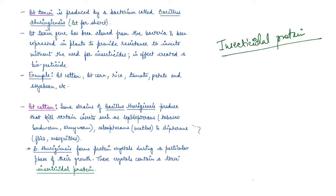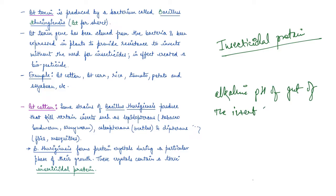When this protein is inside the bacteria, it is in an inactive state, which is why the bacteria is not killed even while producing the toxin. But as soon as an insect ingests the inactive toxin, it is converted into its active form because of the alkaline pH of the insect's gut. The alkaline pH present in the gut solubilizes the crystal, the inactive protein becomes active, and it binds to the surface of epithelial cells, creating pores which cause cell swelling, lysis, and eventually death of the insect.